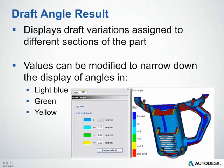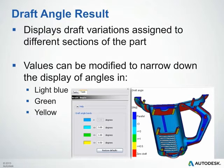The draft angle result very simply displays the draft variations assigned to different sections of your part. This can be very useful in checking your part design to ensure that you can get it out of the tool and do have the proper draft angles assigned. These values on the scale can also be modified to narrow down the display of angles that you wish to see.